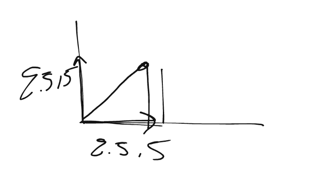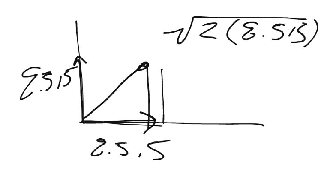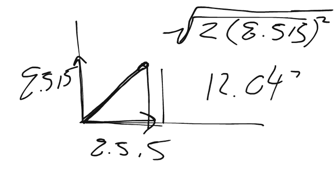So if my up and my over equal that, then I can use the Pythagorean theorem and do the square root of 2 times 8.515 squared. So 2 times that squared, the square root of it, and we get that our resultant vector has an initial velocity of 12.04326 meters per second.